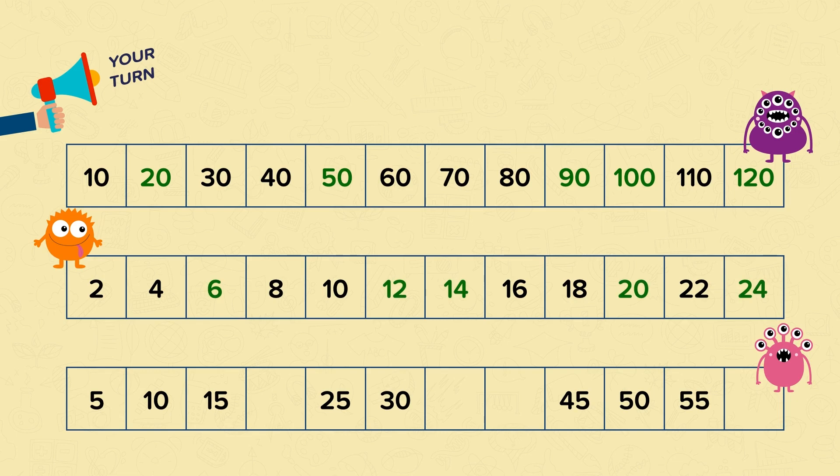And finally for the last number track you had to count in 5s. Well done if you knew that the missing numbers were 20, 35, 40 and 60.